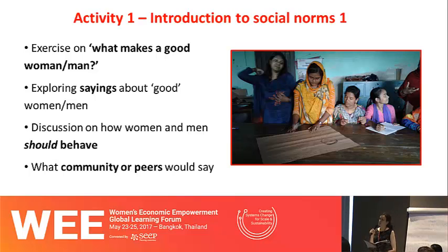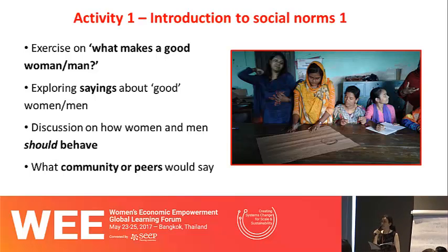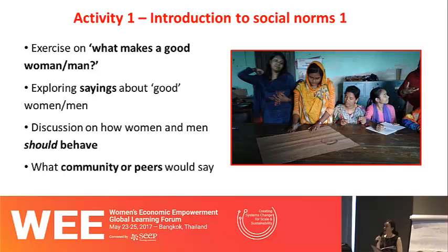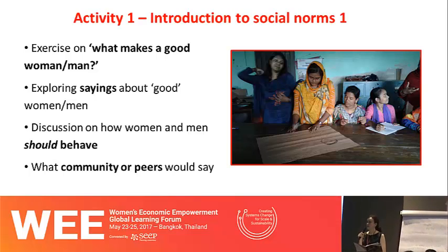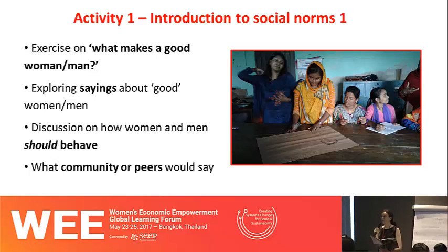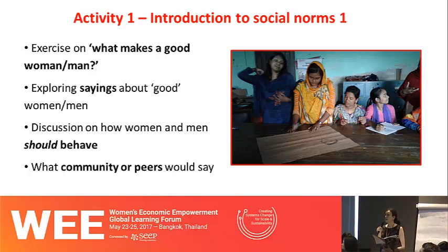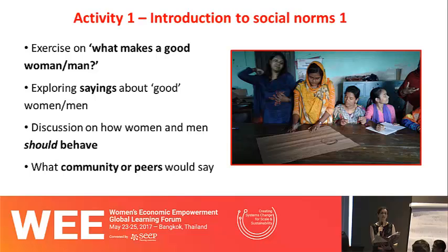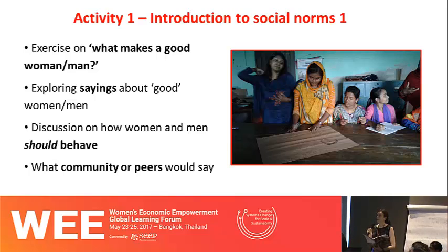The first activity drew on various tools and techniques. We had an exercise on what makes a good woman and a good man, exploring sayings around what good women and men do or what they're like, which led into a discussion on how women and men should behave. Referring back to the earlier presentation, this is about looking at injunctive norms — what people think they should do rather than what people think they do. We also focused on what the community or peers would say, to reduce social desirability bias, so we were referring to what other people thought rather than what participants themselves thought.